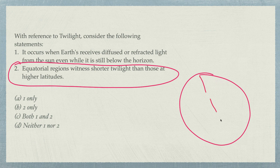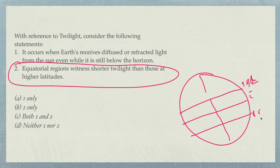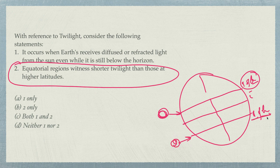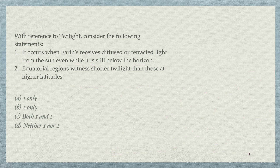The apparent movement of the sun — our earth moves in this way. There is the equator, the Tropic of Cancer, and the Tropic of Capricorn. In summertime the sun is overhead at the Tropic of Cancer; in winter it moves to the Tropic of Capricorn. Equatorial regions witness shorter twilight than those of higher latitudes — this is true.